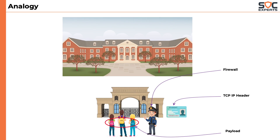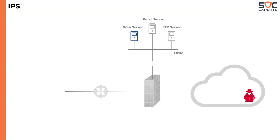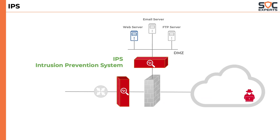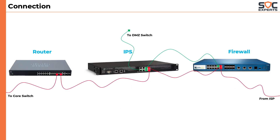That's why we needed another solution that would scan the contents of the packet. That's where IPS fits in. IPS stands for Intrusion Prevention System. It is a security solution that does deep packet inspection and detects any malicious network patterns. Deep packet inspection means looking at the payload of the packet. It is typically placed after the firewall in the network.